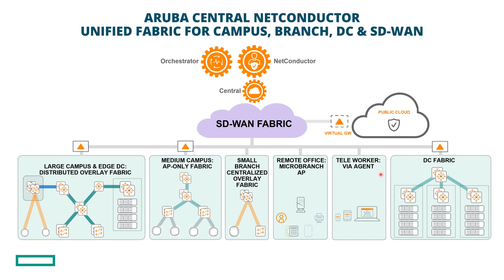Finally, a teaser on policy: you may have heard the term NetConductor. This is Aruba's approach to zero trust networking in the campus, branch, and data center — building fabric overlays and utilizing the role in a scalable manner to enforce policy within the distributed enterprise. As of EdgeConnect release 9.4, we support EVPN VXLAN on the EdgeConnect to integrate with a NetConductor fabric, propagate roles over the WAN, and have all branches participate in a NetConductor fabric. Check out the NetConductor section in the Validated Solution Guide and reach out to your Aruba SE for more information.